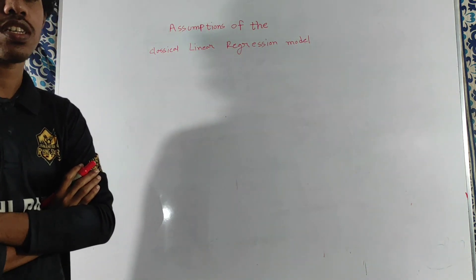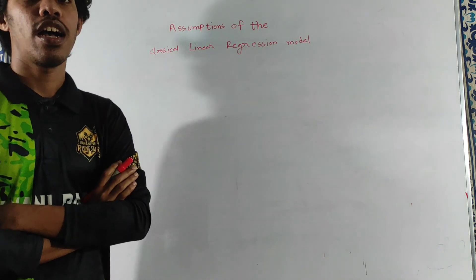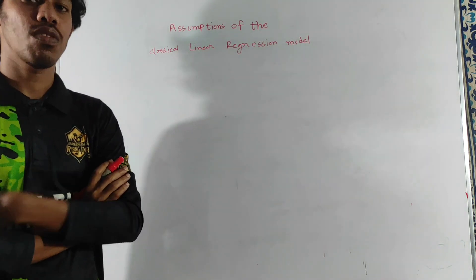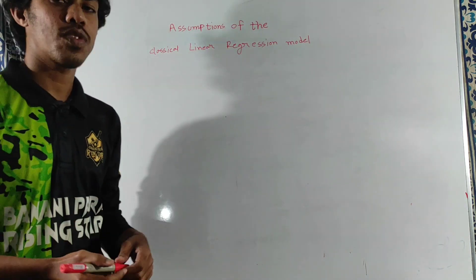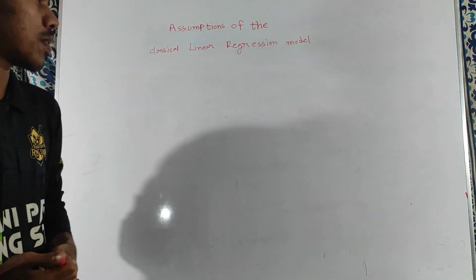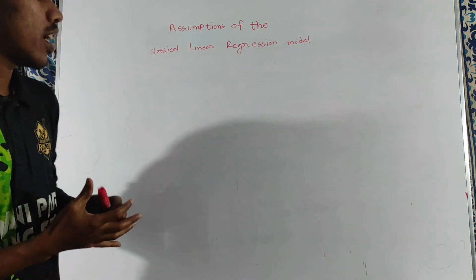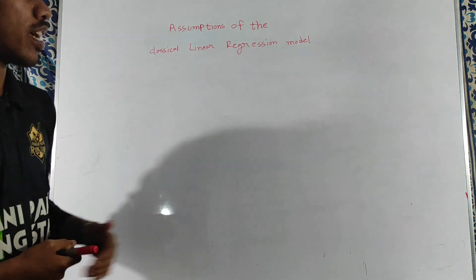We have Beta1, which is the intercept, and Beta2, which is the slope coefficient. We are going to show you the OLS estimation and its assumptions.